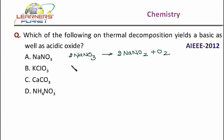Now, there is potassium chlorate, KClO3. This KClO3 on dissociation gives KClO4 and KCl.